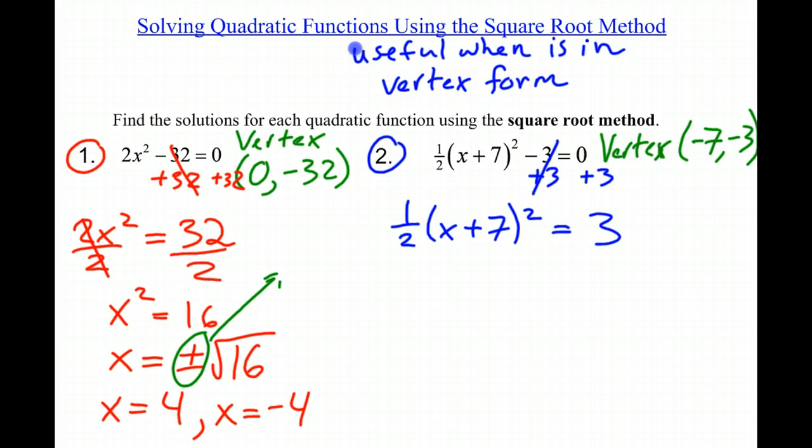Now, to get rid of this 1/2 out front, I'm going to multiply by the reciprocal, which is 2, and multiply 3 by 2 on the right side. So (x + 7)² is equal to 3 times 2, which is 6.